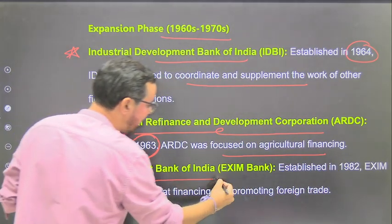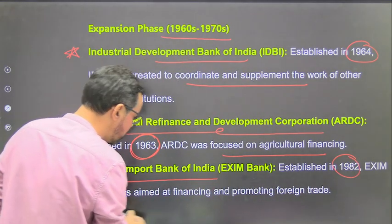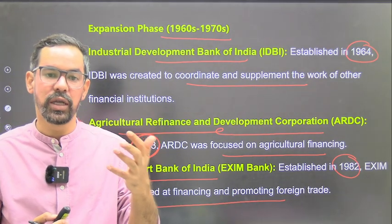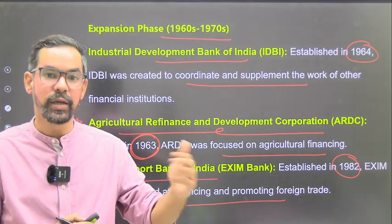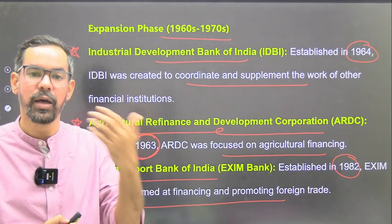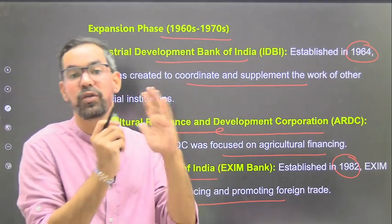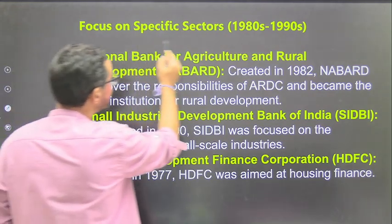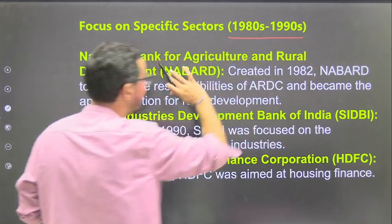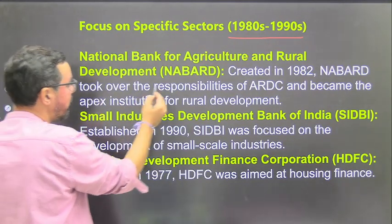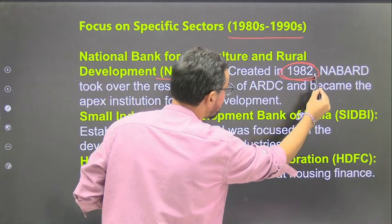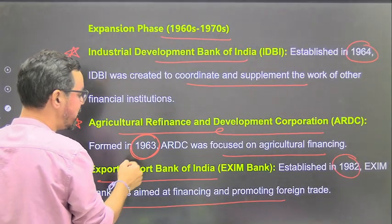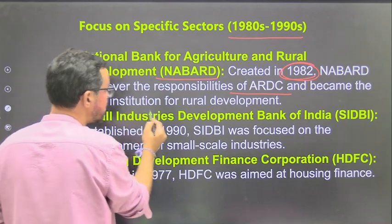In the 1980s and 1990s, NABARD - National Bank for Agriculture and Rural Development - was established on 12 July 1982. NABARD took over the responsibilities of ARDC, which was established in 1963, and became the apex institution for rural development. SIDBI - Small Industrial Development Bank of India - was established in 1990, focused on development of small scale industries and MSMEs. Housing Development Finance Corporation - HDFC - was founded in 1977, majorly focused on housing development, and now also works as a commercial bank and one of the largest private sector banks in India.